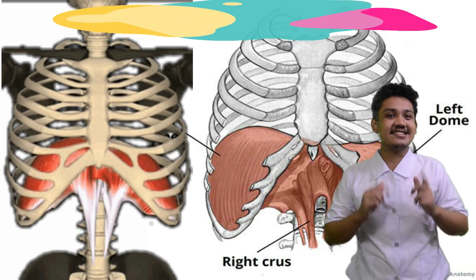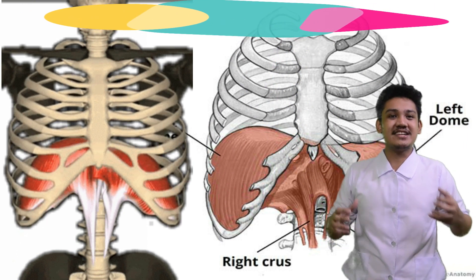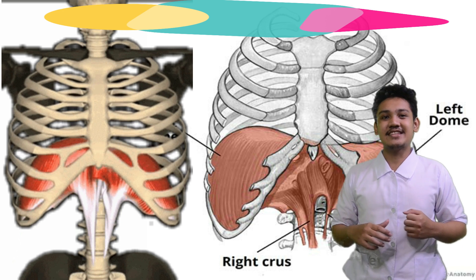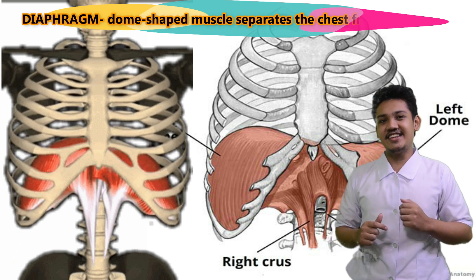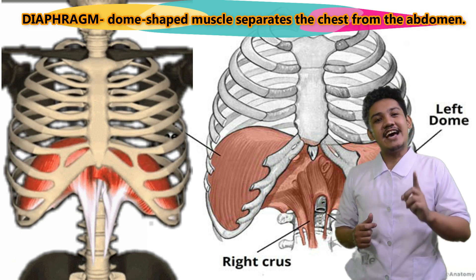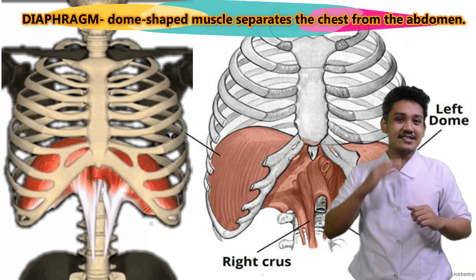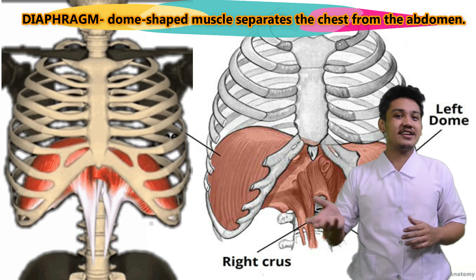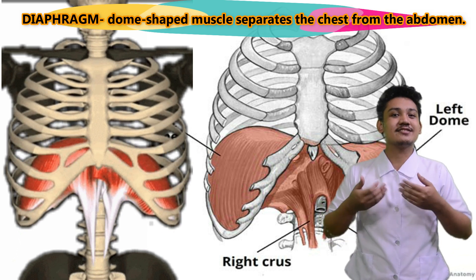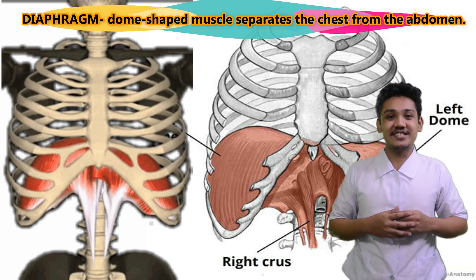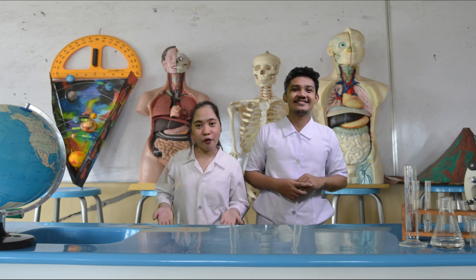And the last part is the diaphragm. It is a dome-shaped muscle that separates the chest from the abdomen. During inhalation, the diaphragm contracts and moves downward to give more space to the lungs. During exhalation, the diaphragm returns to its normal shape and position. And that's our science lesson for today.